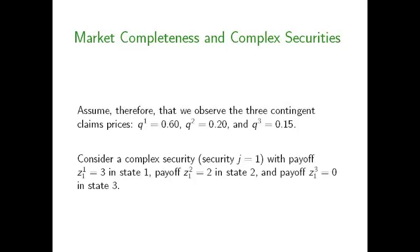Now what we want to do is use these contingent claim prices to price a complex security — one that pays off positive amounts in more than one state of the world. For the sake of example, let's say complex security one pays off $3 in state one, $2 in state two, and zero in state three.